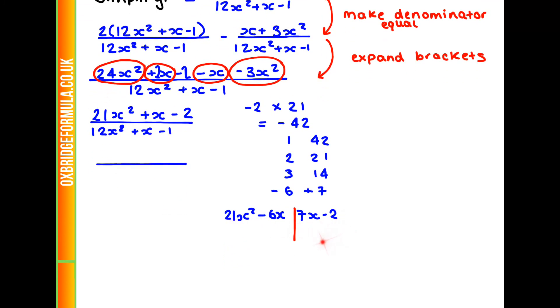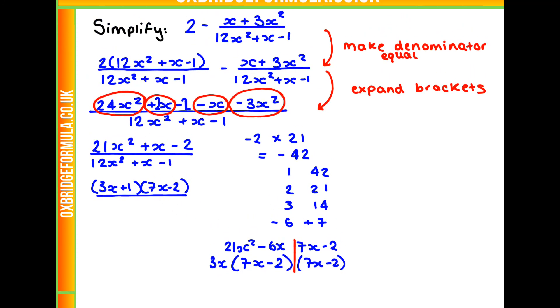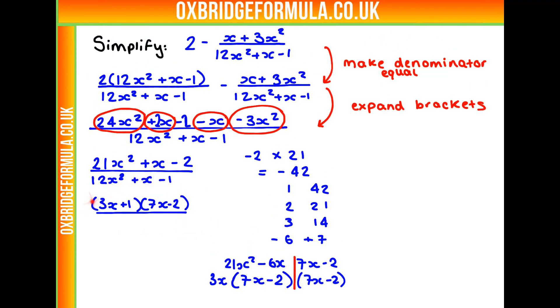Now these are a lot easier to factorize. So if we just factorize these by themselves, we can get 3x times 7x minus 2, and 7x minus 2 by itself. Now we can see that this bracket here is the same in both. So this is going to be one of our bracketed terms. And the other one is going to be what's at the front of them. So we've got 3x there, and it looks like we have nothing here, but we're actually just multiplying this by 1. So our first bracket is going to be 3x plus 1, and our second one is going to be 7x minus 2. And that is our numerator that we've solved.